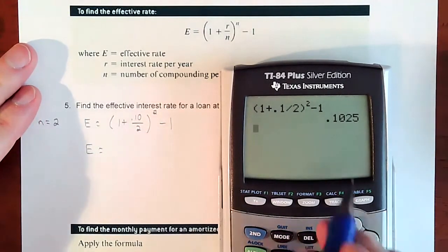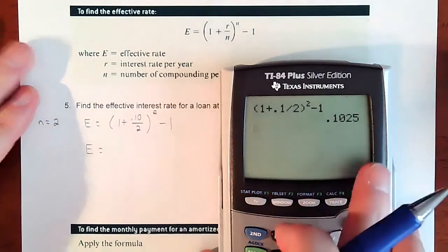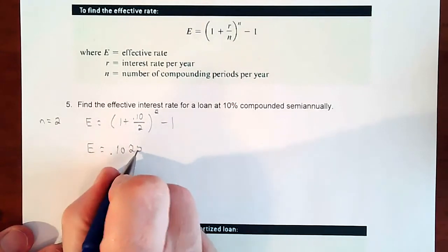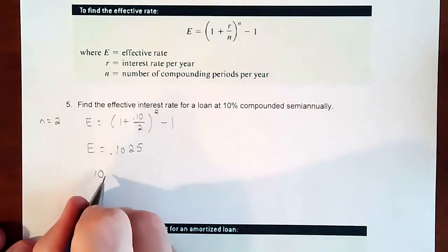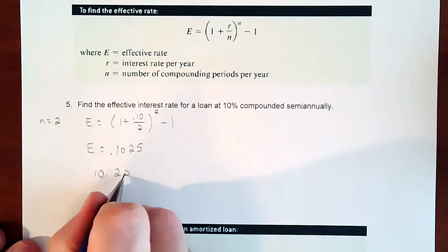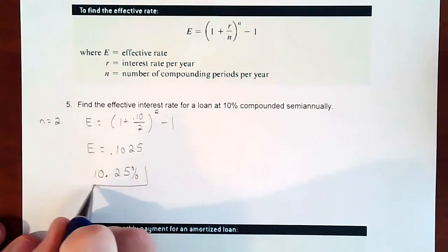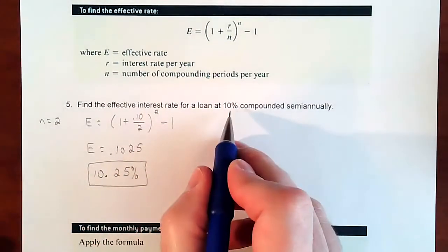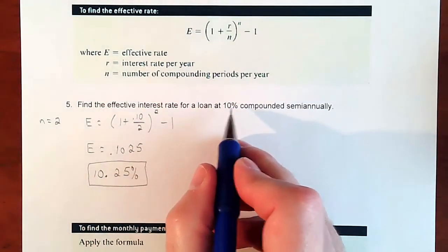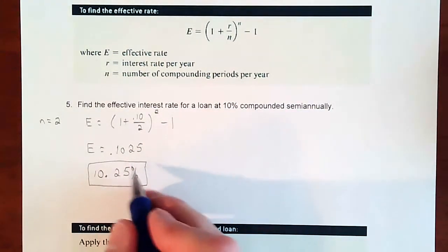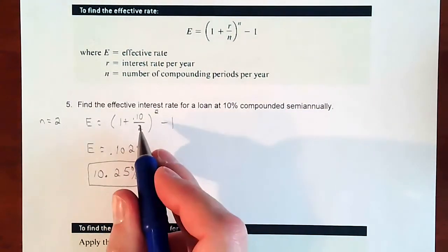And there is our percentage. So that 0.1025, write that down. 0.1025 means you earn 10.25%. And that's really what ended up happening. So even though it states that you're earning 10%, because you're compounding, it's the interest earning interest. You got a little extra because of that interest earning interest one time extra per year.